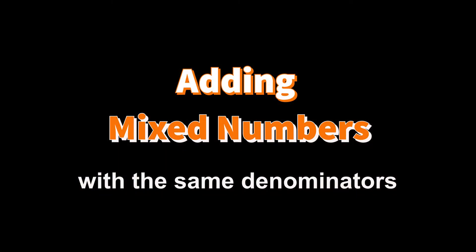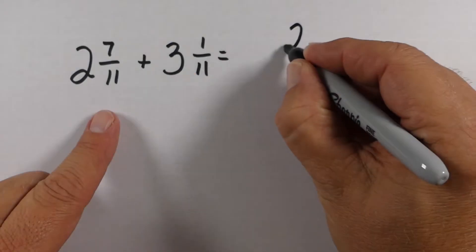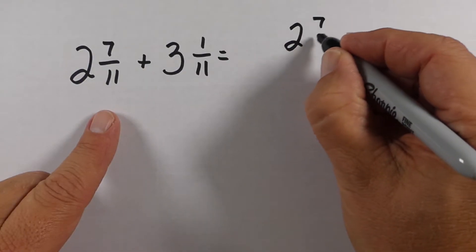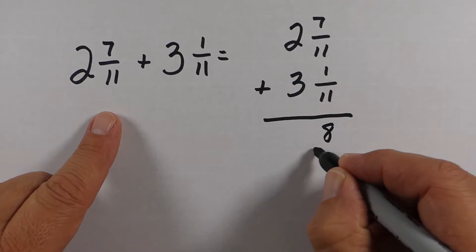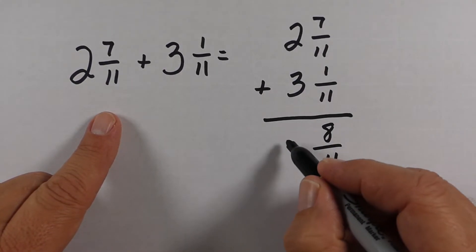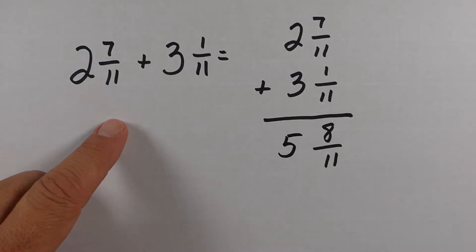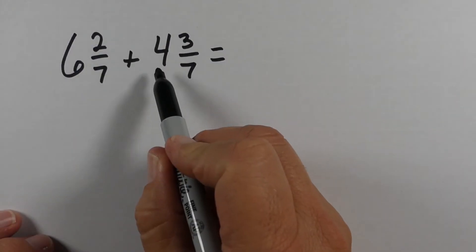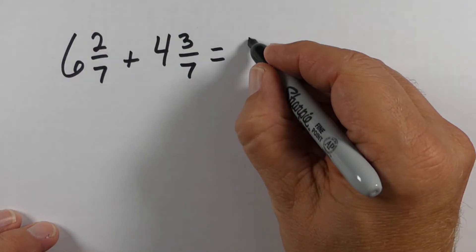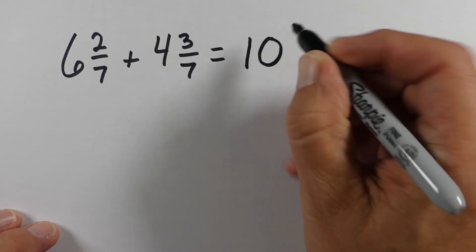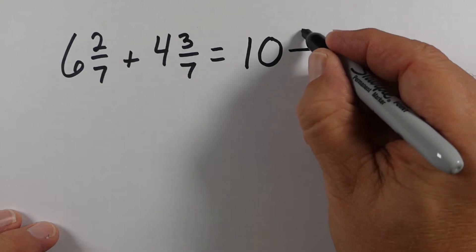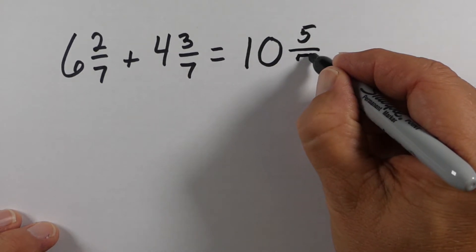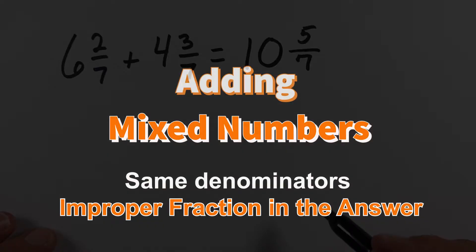Now we're going to start adding mixed numbers. The first example has the same denominator: 2 and 7/11 plus 3 and 1/11. Stacking them up, if I add the fractions I get 8/11, and if I add the whole numbers I get 5 — so the answer is 5 and 8/11. On another problem, adding the whole numbers gives 10, and 2/7 plus 3/7 gives 5/7, for a final answer of 10 and 5/7.